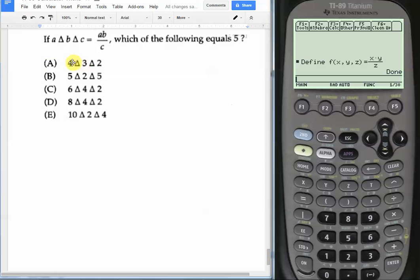Let's try choice A first, where we have 4 triangle 3 triangle 2. Now, let's again push alpha, F. What is F of 4 comma 3 comma 2? We enter 4 comma 3 comma 2, close parenthesis. We can see the output is 6, which is not the answer we're looking for. We're looking for 5.